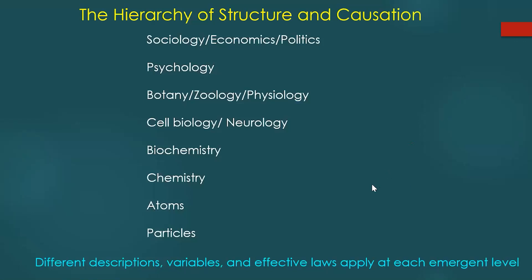Here it is in a more abstract form: particles, atoms, chemistry, biochemistry, cell biology, neurology, zoology, physiology, psychology, and above that sociology, economics, and politics. There are different descriptions, variables, and effective laws at each emergent level. You can study each level and get laws that operate there — biochemistry laws, chemistry laws, cell biology laws, physiology laws, and so on.